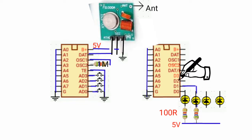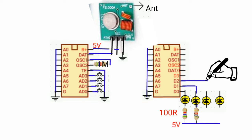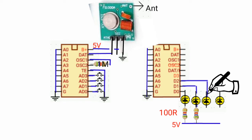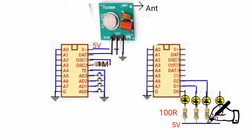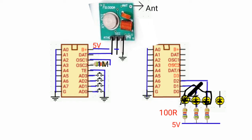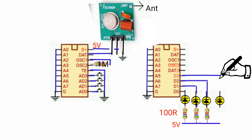Connect D2 to the cathode of another LED, and connect the anode of the LED to a resistor, then connect the resistor to the power supply. D3 will similarly be connected to the cathode of another LED with a resistor to power.